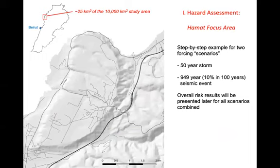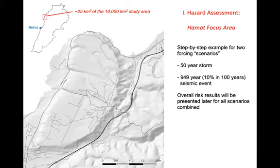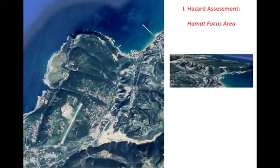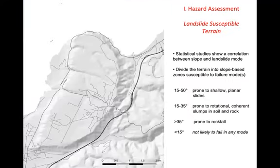I'm going to zoom in to one particular region and step through this in some detail. The area shown is just about 25 square kilometers — a tiny fraction of Lebanon's overall area of over 10,000 square kilometers, but it allows us to look at what's really going on under the hood with this landslide risk assessment platform. I'm going to show examples for two different scenarios: a 50-year storm event and about a thousand-year seismic event, and then ultimately show risk results integrated across different return periods. This is the area of Hamat — a populated region that also contains infrastructure systems, including the major north-south highway across the country.